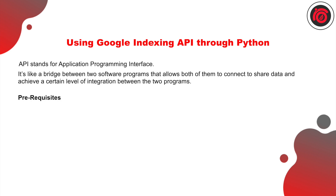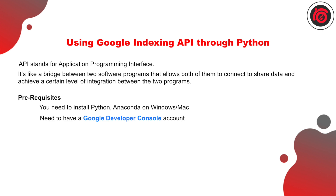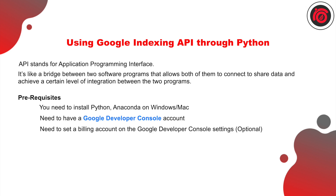Some of the prerequisites to performing this action: you have to install Python Anaconda on Windows or Mac, you have to have a Google Developer Console account, and you need to have set up all the billing details on the account. It is optional; however, it is always recommended that you set up your billing account, otherwise Google prompts you to enter your business details again and again.